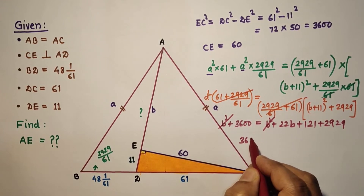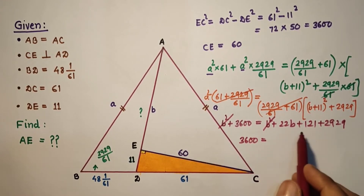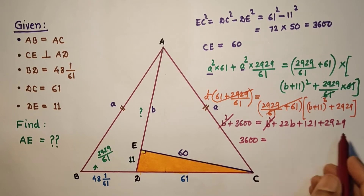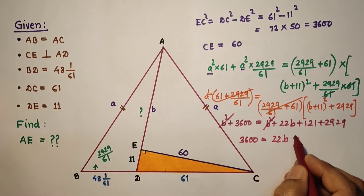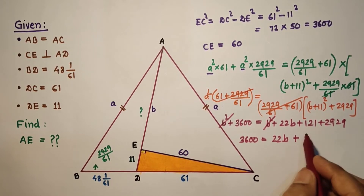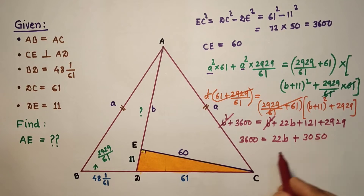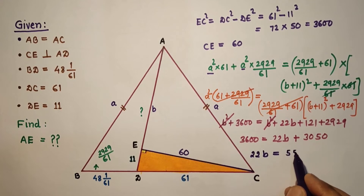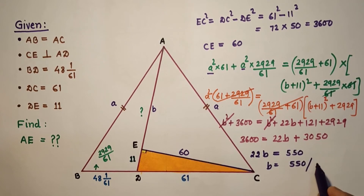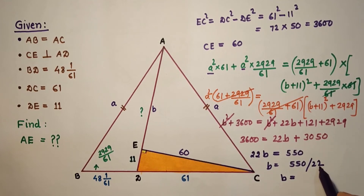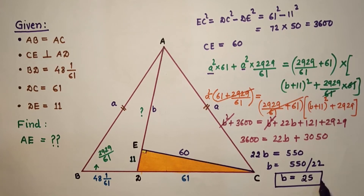Substituting a² = b² + 3600: b² + 3600 = b² + 22b + 121 + 2929. The b² terms cancel, giving 3600 = 22b + 3050. Therefore 22b = 550, so b = 550 ÷ 22 = 25 units.